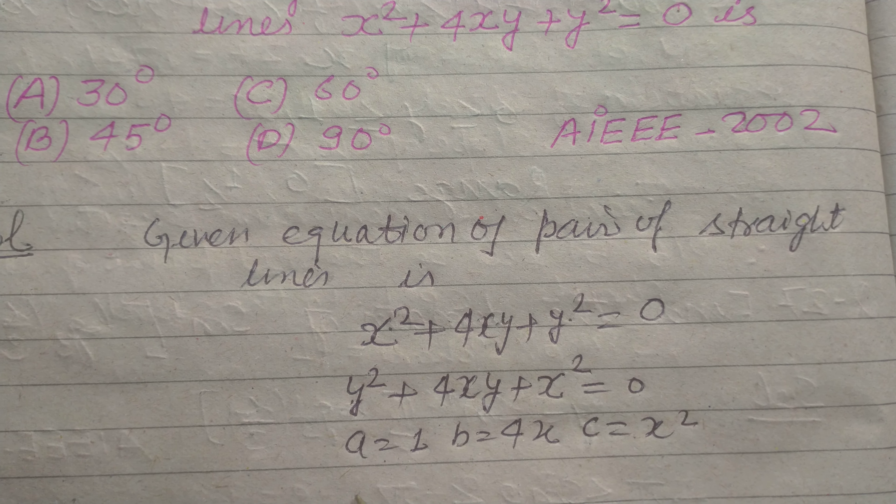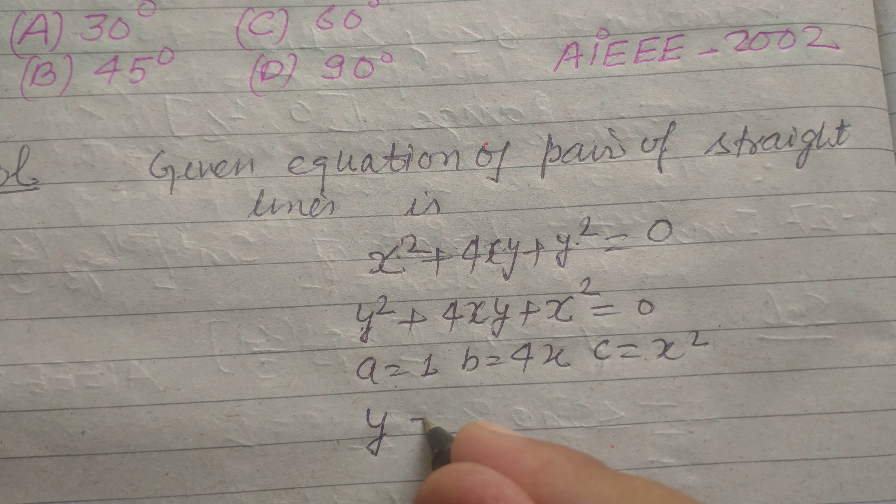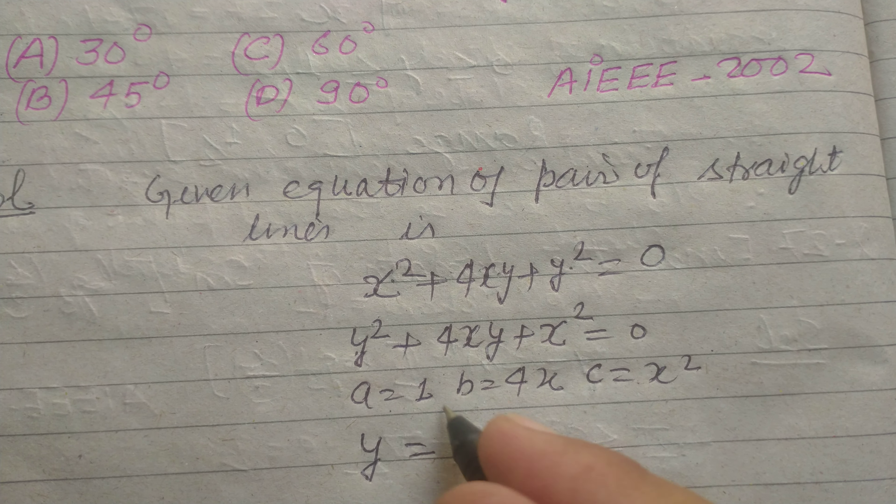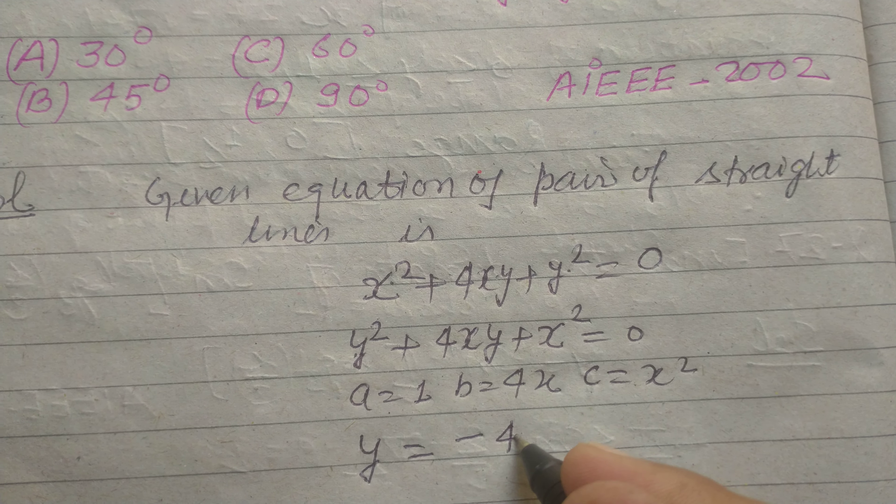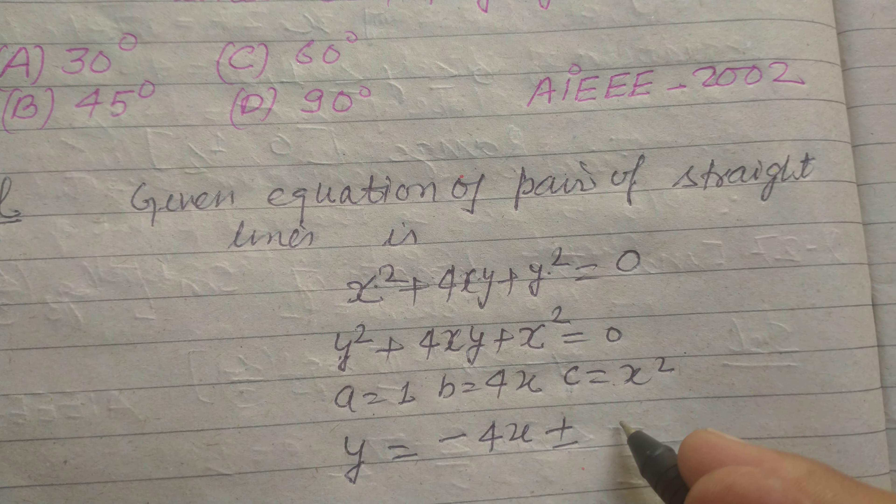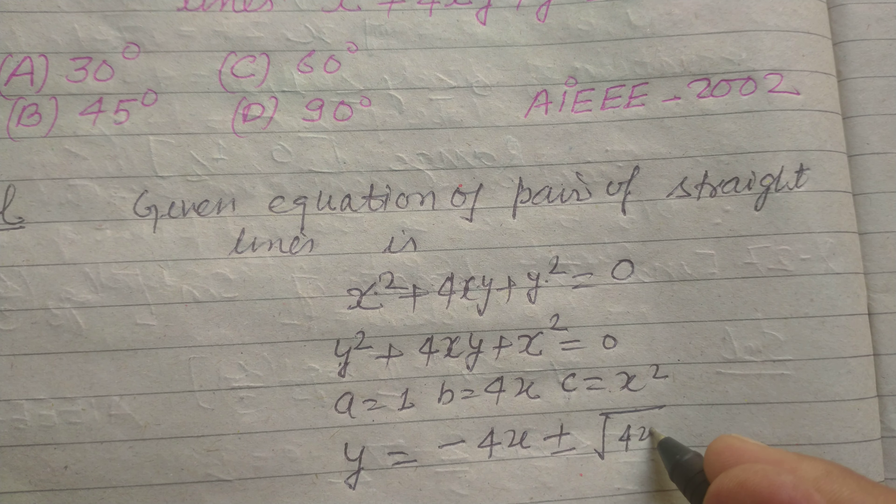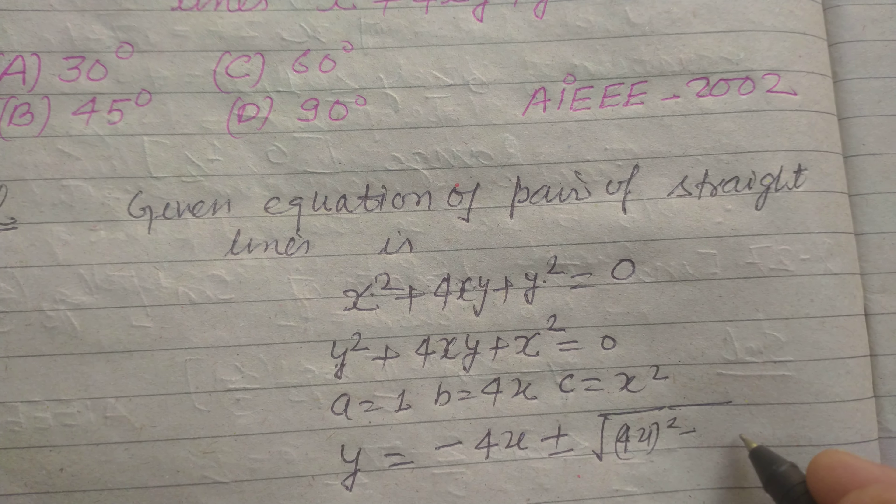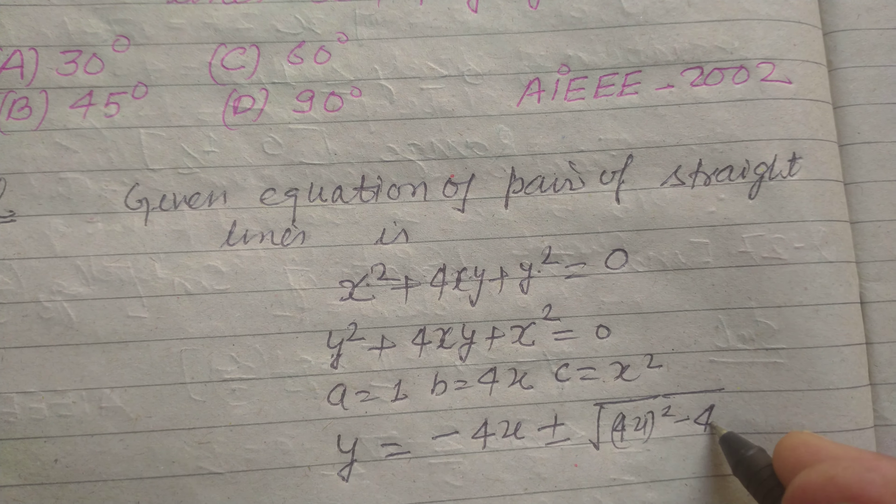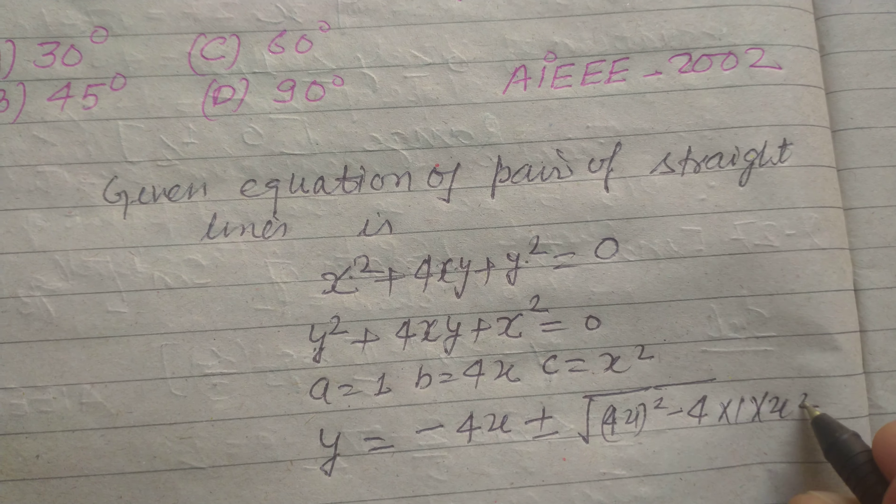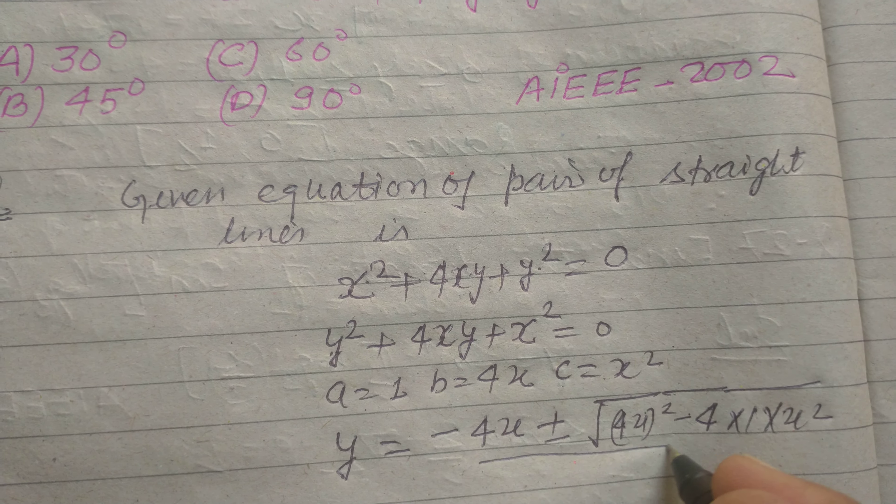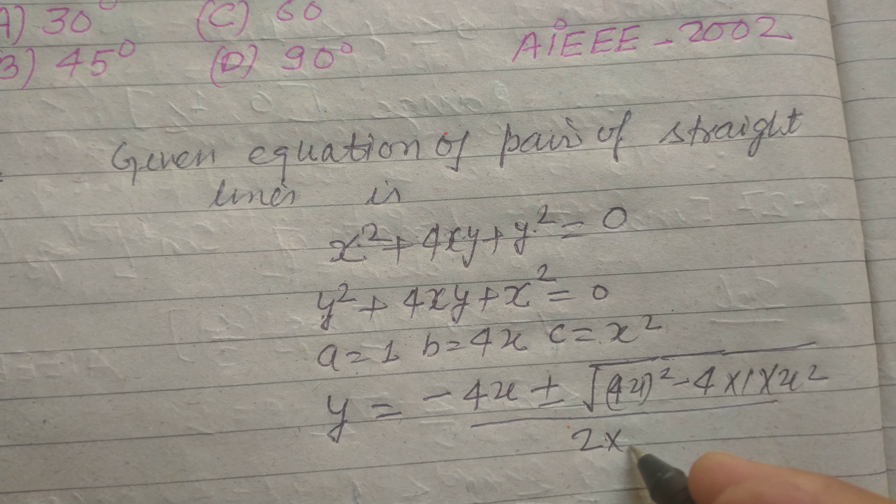So using the quadratic formula, y = -b, minus b is 4x plus minus root b², b is 4x², minus b² minus 4a, a is 1 and c is x², upon 2a, 2 into 1.